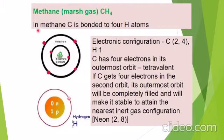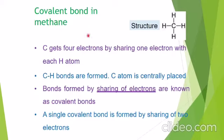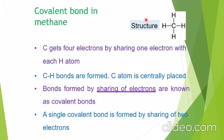We have discussed the formation of methane, which is a marsh gas. In methane, carbon is bonded to four hydrogen atoms. Carbon gets four electrons by sharing one electron with each hydrogen atom, so four C–H bonds are formed, and the carbon atom is centrally placed. Bonds formed by sharing of electrons are known as covalent bonds. A single covalent bond is formed by the sharing of two electrons to form a single bond.